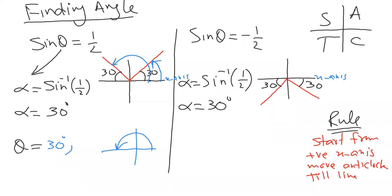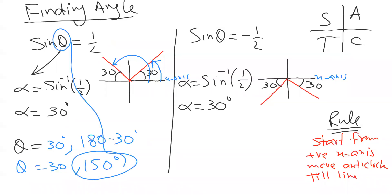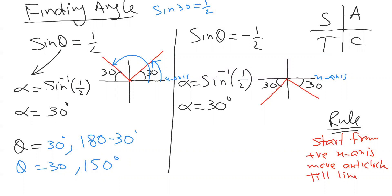For the second answer, start from the positive x-axis and move anti-clockwise to the second line in Q2. A straight line is 180 degrees, and the angle from that line to my target is 30 degrees less, so the answer is 180 − 30 = 150 degrees. The two answers are 30 and 150. You can verify: sin 30 = 1/2 and sin 150 = 1/2.